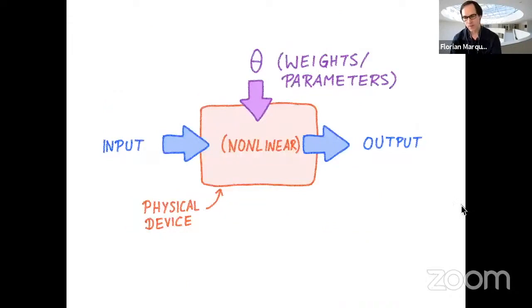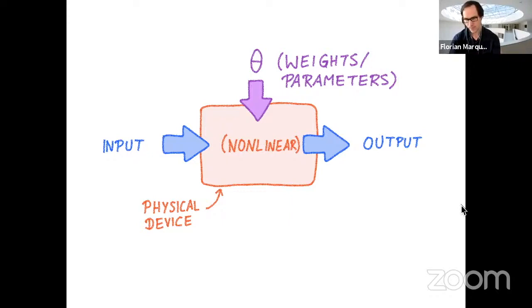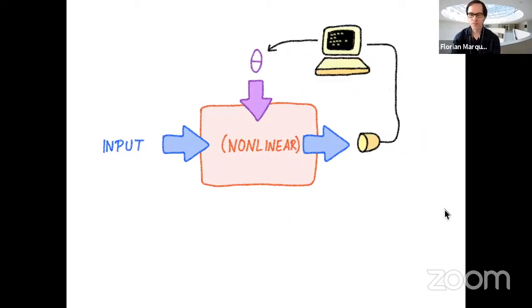What I will be talking about today concerns this general scheme where you have some kind of physical device that has some nonlinear dynamics. If you can feed in some input in the form of, say, a wave and get some output, then you can view it as an information processing device. And if you also have some tunable parameters, there's a chance you can train this device and make it perform the input-to-output mapping that you want. One of the simplest ways to go about training these parameters is to look at the output and decide whether it deviates from the desired output, then use some electronic computer to figure out how to tune the parameters.